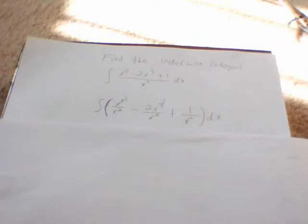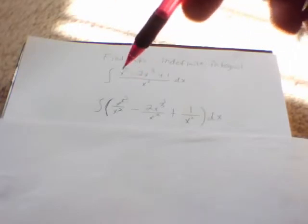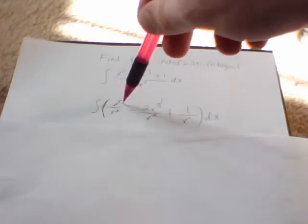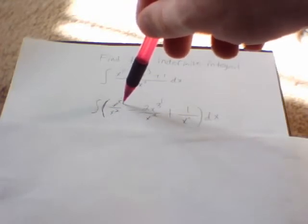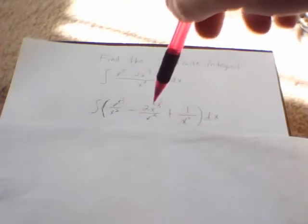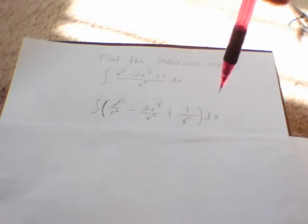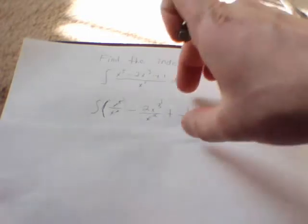When you get that, you have to simplify. That's going to give us x cubed minus 2x plus 1 over x squared.